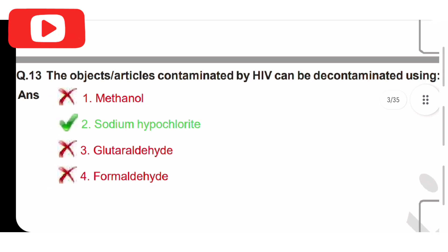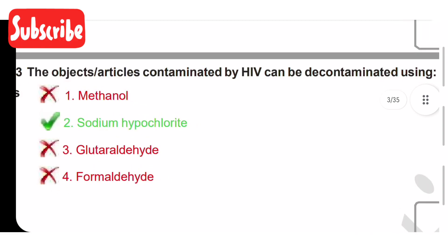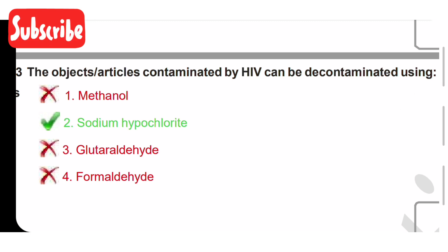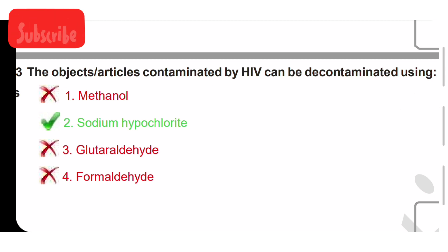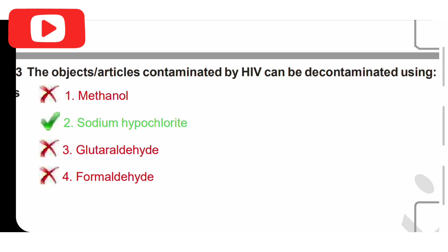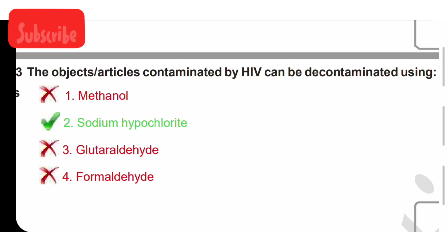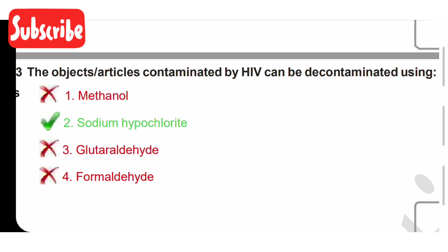Objects or articles contaminated by HIV can be decontaminated using: option one is methanol, option two is sodium hypochlorite, option three is glutaraldehyde, option four is formaldehyde. Sodium hypochlorite is the decontamination solution for HIV-contaminated articles or objects.